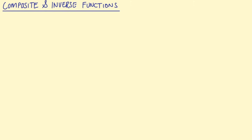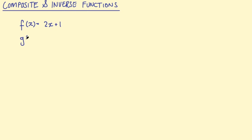Let's start on composite functions. So if we take two functions — the function f equals 2x plus 1, and another function g equals x squared — a composite function would be combining these two functions. So I might want to find the function f of g, which means putting the function g into the function f. We're basically combining two functions, so we call those composite functions.